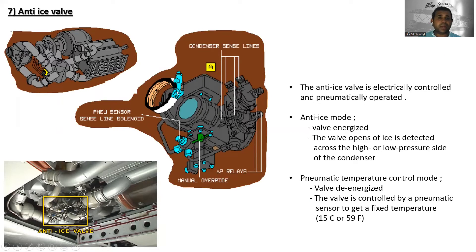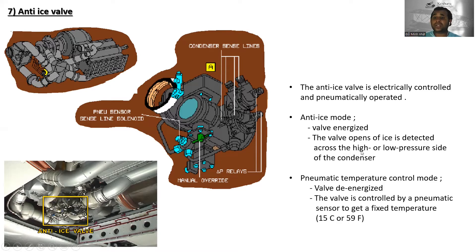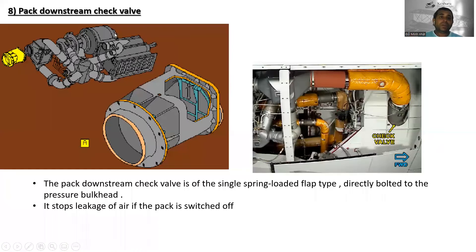Next is the anti-ice valve. You can see the condenser sense lines, delta pressure relays, manual override, and pneumatic sensor sense line solenoid. The anti-ice valve is electrically controlled and pneumatically operated. In anti-ice mode, the valve is energized and opens if ice is detected across the high or low pressure side of the condenser. In pneumatic temperature control mode, the valve is de-energized and controlled by the pneumatic sensor to maintain a fixed temperature of 15°C (59°F).